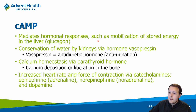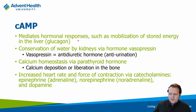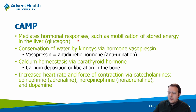Cyclic AMP can help mobilize energy. In the liver, which stores glycogen as a temporary storage spot for glucose, if you're hypoglycemic, glucagon can stimulate the breakdown of glycogen and produce new glucose — gluconeogenesis — partly mediated through cyclic AMP. We also see cyclic AMP involved in kidney function through vasopressin, also called anti-diuretic hormone (ADH), which helps retain water. Calcium homeostasis via the parathyroid and cardiac function — including force of contraction and heart rate — are also affected by cyclic AMP.